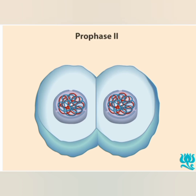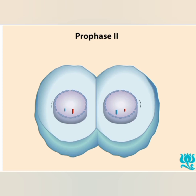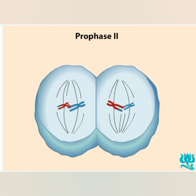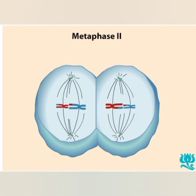During the second half of meiosis, in prophase 2, the chromatin again condenses into discrete chromosomes. There are now only a haploid number of chromosomes per cell. Each chromosome consists of two chromatids joined together by a centromere. At metaphase 2, the chromosomes have lined up on the equatorial plate. Microtubules from opposite poles attach to each sister chromatid of a chromosome.